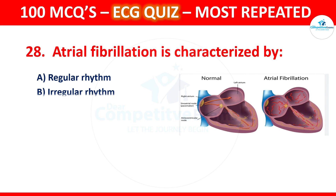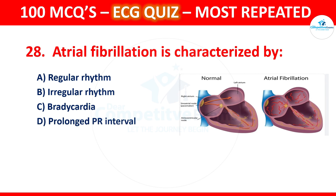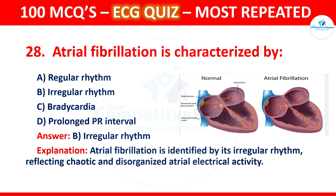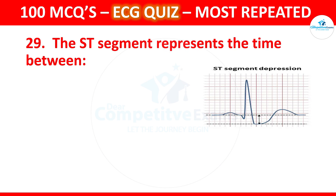Question 28: Atrial fibrillation is characterized by which of the following? Options are a regular rhythm, irregular rhythm, bradycardia, or prolonged PR interval. The correct answer is irregular rhythm. Atrial fibrillation is identified by its irregular rhythm, reflecting the chaotic and disorganized atrial electrical activity.